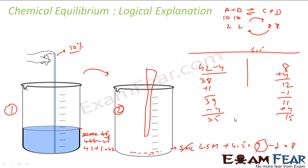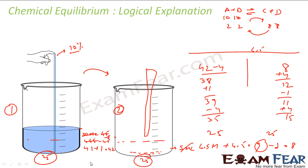As you keep repeating — from 35 and 15, then continuing — you'll see the values converging. Eventually both beakers reach 25 ml each. Even if you keep shuffling water at 10% back and forth, the system stays at 25:25. When it's 25:25, 10% moving one way is exactly returned the other way — so it always remains in equilibrium. That is the logical representation of dynamic equilibrium.